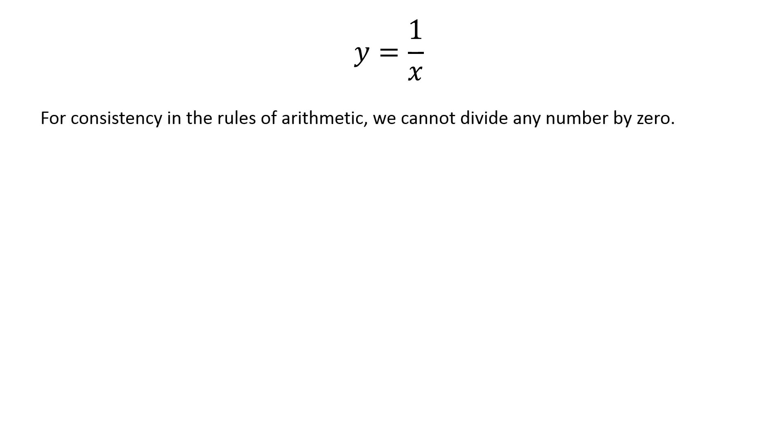For consistency in the rules of arithmetic, we cannot divide any number by 0. This function gives real values for all x, except x equals 0, because at x equals 0, the denominator is 0 and y is undefined.